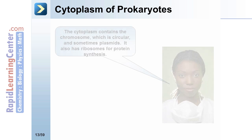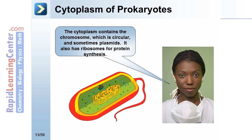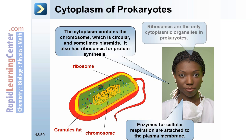Cytoplasm of prokaryotes. The cytoplasm contains the chromosome, which is circular, and sometimes plasmids. It also has ribosomes for protein synthesis. In this schematic, the ribosomes are shown as blue spheres. The cytoplasm also contains granules of fat or lipids. Enzymes for cellular respiration are attached to the plasma membrane. Ribosomes are the only cytoplasmic organelles in prokaryotes.